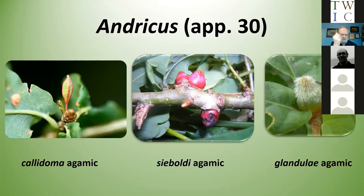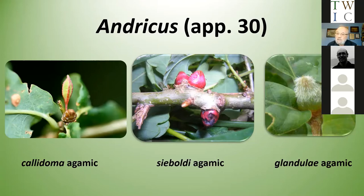We're currently trying in the Society to sort out the iRecord species dictionary, which is quite complex with gall insects — whether you're recording the galls or the insects — and some of the taxonomy of some galls is very confused. We're trying to coordinate records on iRecord and learn more about distributions.